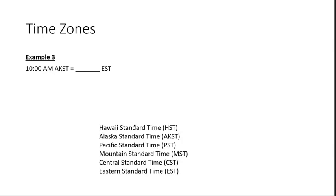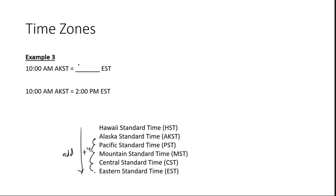Example three: 10 a.m. Alaskan Standard Time, converted to Eastern Standard Time. Going from Alaska to Eastern, we're moving east — so we add. Counting the time zones: 1, 2, 3, 4. We add 4 hours. Adding 2 hours takes you to noon, then 2 more hours to 2 o'clock p.m. So the answer is 2 p.m. Eastern Standard Time.